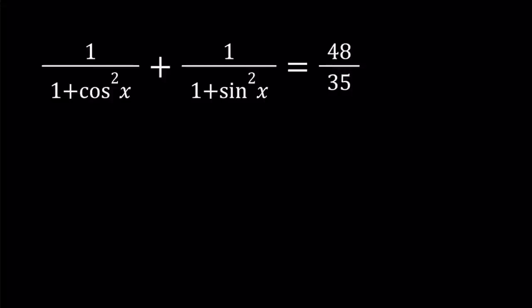Hello everyone, in this video we're going to be solving a trigonometric equation. We have 1 over 1 plus cosine squared x plus 1 over 1 plus sine squared x equals 48 over 35. And we're going to be solving for x values.